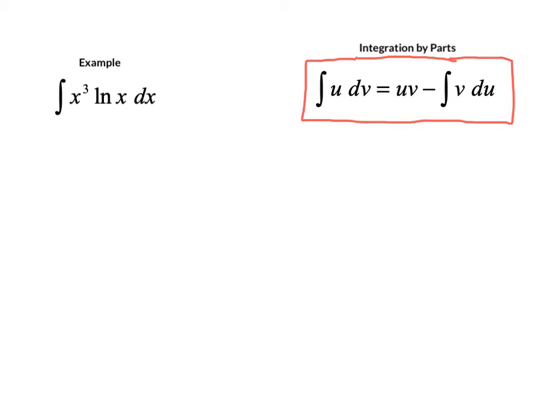So when we use integration by parts, we need to make two decisions. What is the factor we're going to call u, and what is the factor we're going to call dv? The guidelines are that u is the factor that becomes simpler when we take the derivative. In this case, when we have an algebraic factor and a natural log, the u factor is always the log.